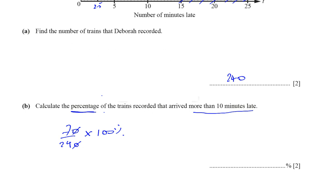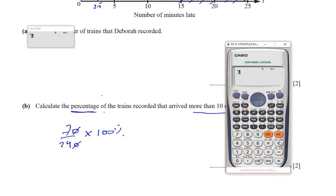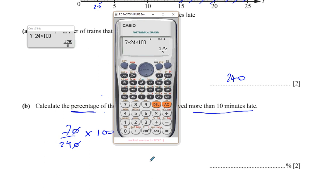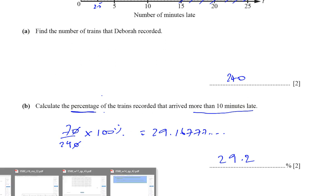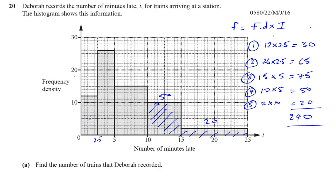Getting the calculator back: 7 divided by 24, times 100%. You don't put the percent sign into the calculator. That gives 175 divided by 6, which is 29.16777... You can write this as 29.2%, rounded to three significant figures. So the answer for question 20 Part B is 29.2%.